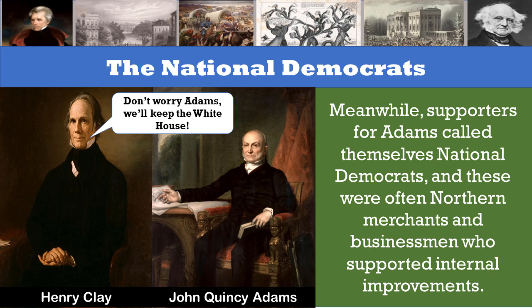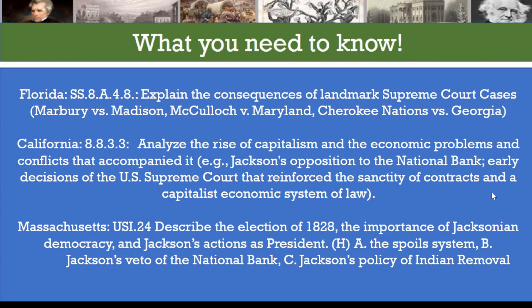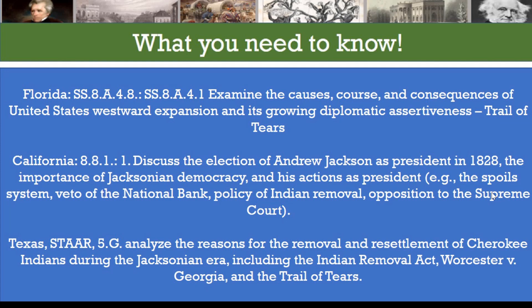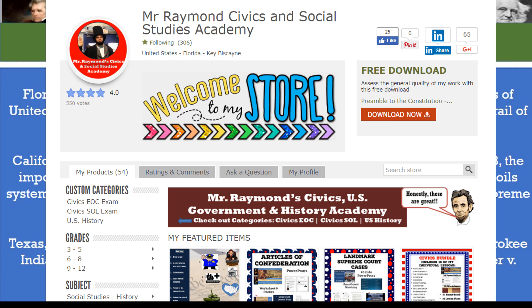So what do you need to know? We are going to look at Jackson's presidency — the battles he took on with the other branches of government like the Supreme Court and institutions like the National Bank, how he created what is known as the spoils system, and his policy of Indian removal.